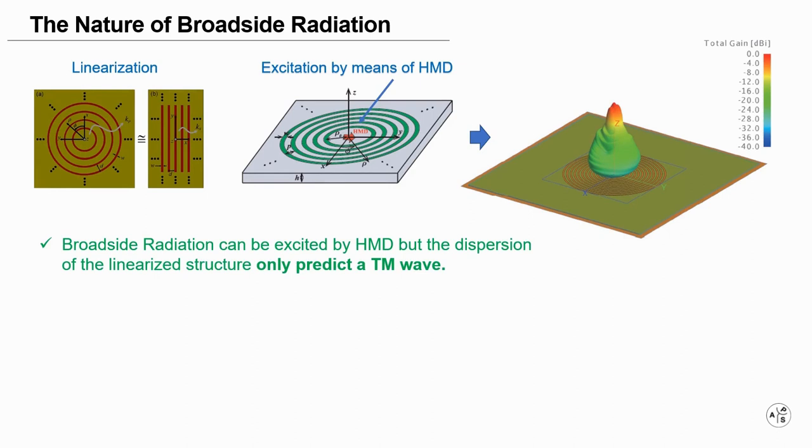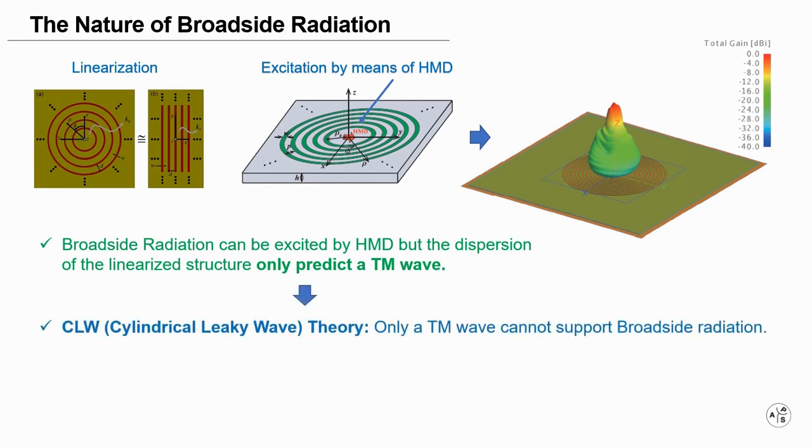However, the dispersion of the linearized structure only predicts a TM wave. On the other hand, based on cylindrical leaky wave theory, only a TM wave cannot support broadside radiation, thus creating a sort of paradox of the radiation mechanism in radially periodic structures.